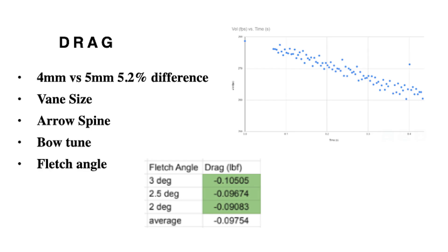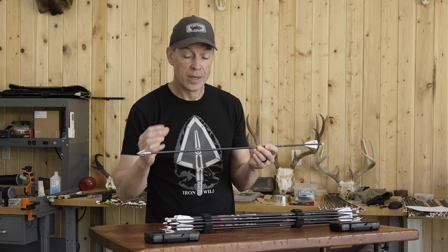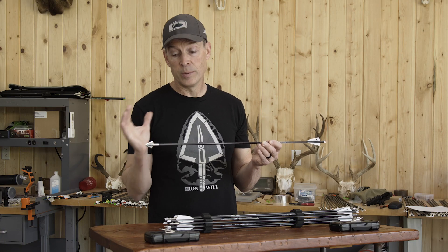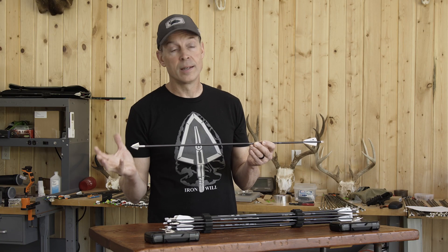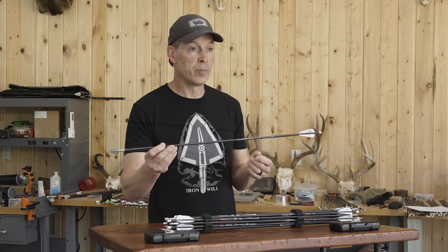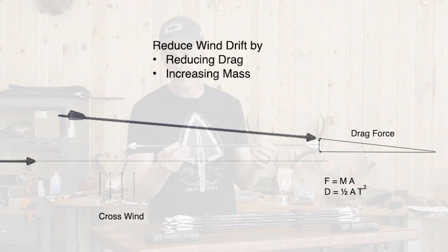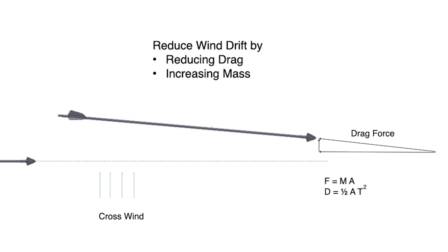For instance, if you're going to get 10 inches of wind drift at some distance with a five millimeter arrow, going to a four millimeter arrow brings that down to 9.5 inches — so not a big difference. You'll have to weigh that against the other advantages and disadvantages of four millimeter versus five millimeter arrows.